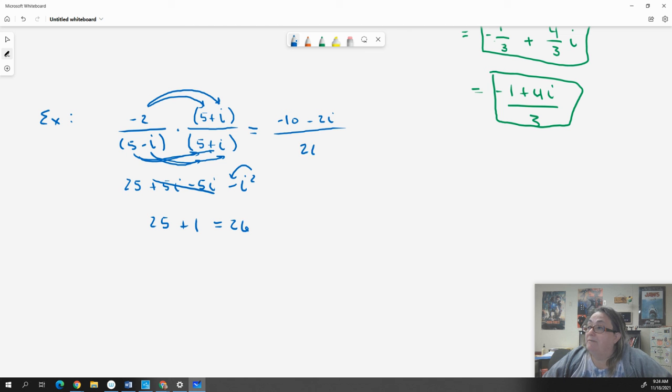Can I leave it like this? No. Reduce that fraction. Everything is divisible by 2, so this can be negative 5 minus i over 13. That is my solution.